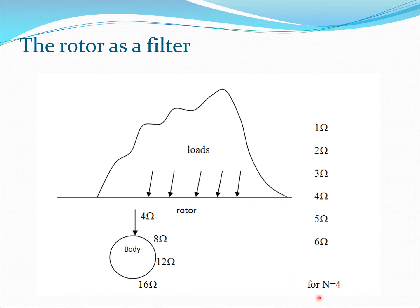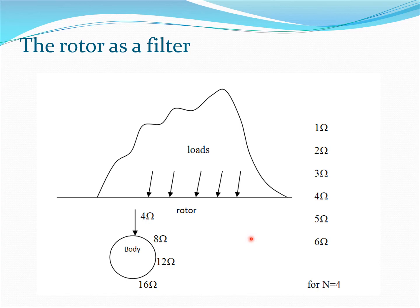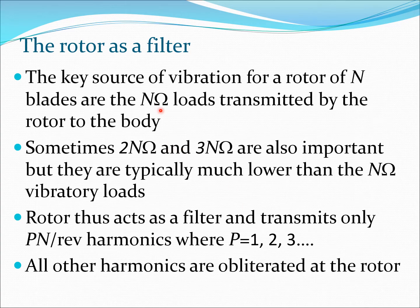For a four-bladed rotor (N = 4), the fuselage receives mostly four-per-rev vibration, with smaller amounts of eight-per-rev, twelve-per-rev, sixteen-per-rev, and so on. The vibration is largely at four-per-rev, with higher multiples being substantially smaller. So while at the rotor disc all harmonics are present, at the fuselage you only get four-per-rev, eight-per-rev, and so on — the rotor is acting as a filter, letting through only multiples of N and blocking all others. The two-N and three-N per rev loads are also present but typically much smaller than the N-per-rev loads.